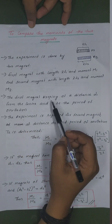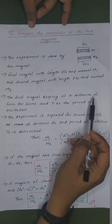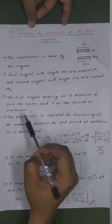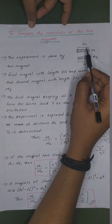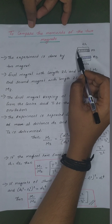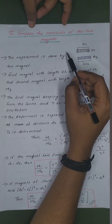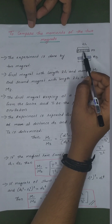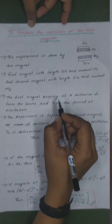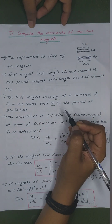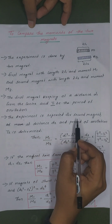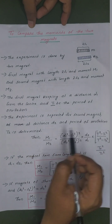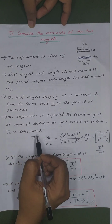The first magnet is kept at a distance D1 from the center, and T1 is the period of oscillation. The experiment is repeated for the second magnet at distance D2, and the period of oscillation T2 is determined.